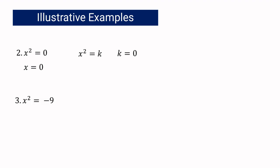Example number 3: x squared equals negative 9. Is it written in x squared equals k? Yes. The value of k is less than 0 because the value of k is negative 9, and all negative numbers are less than 0. Based on the principle, if k is less than 0, then there is no real solution.